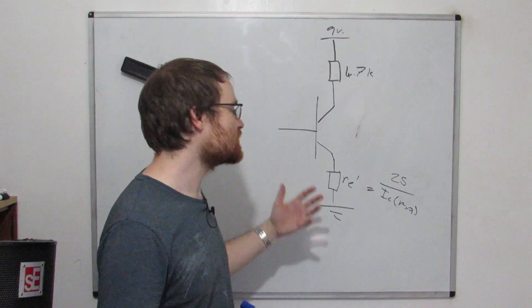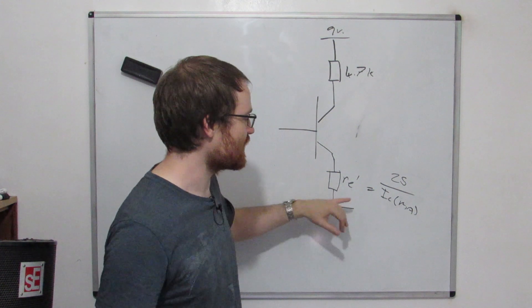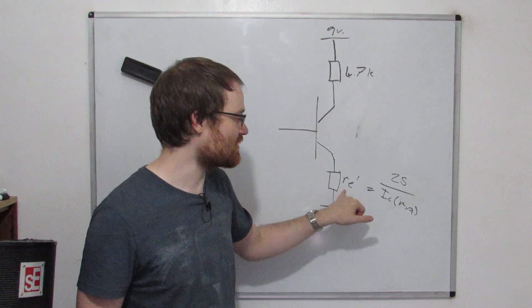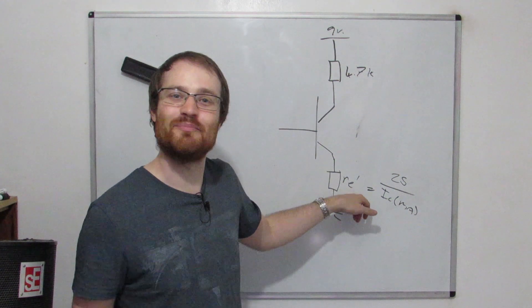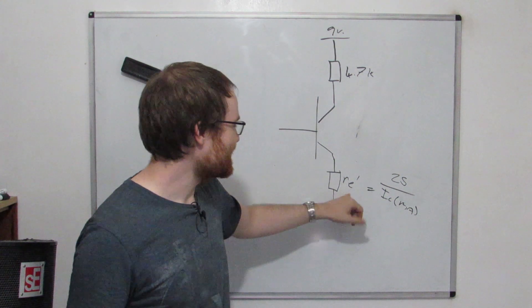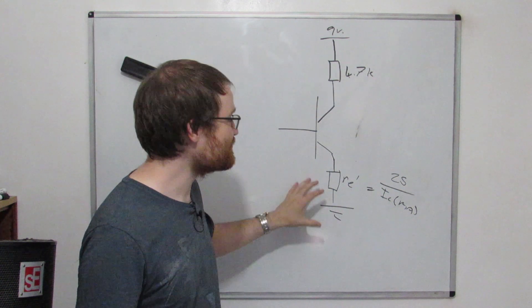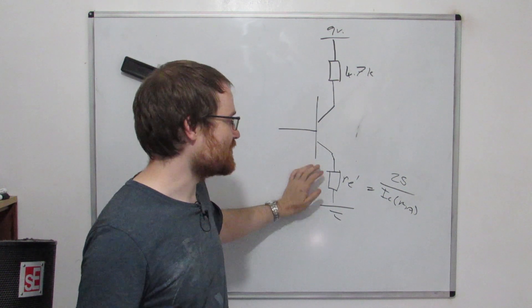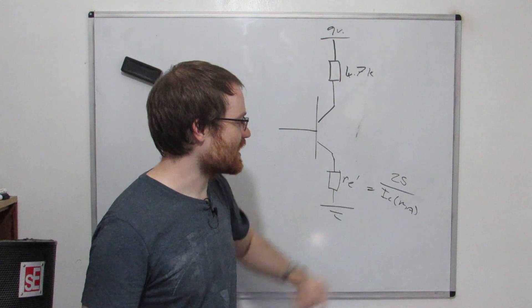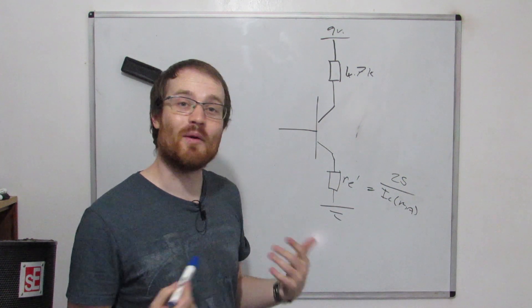That's another useful thing that our emitter resistor is doing: it's swamping out these variations in RE prime by just being much bigger than it. If we have an emitter resistor about 250 ohms or greater, we can generally neglect the effects of RE prime if we keep our collector current above about one milliamp.